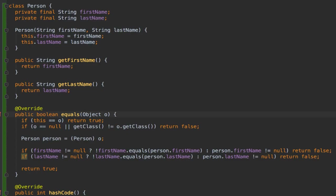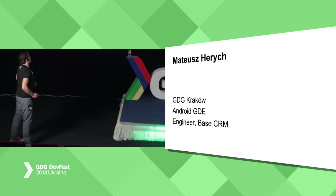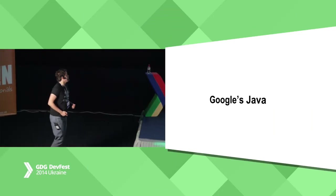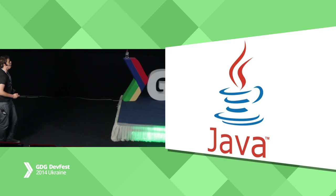So just to make sure we are on the same page — the Scala version is good, but the Java version is not. So now, since I know that you are not sleeping anymore, it's time to introduce myself. I'm Mateusz Herych. I am the co-organizer of the GDG Krakow events. I am also an Android member of the Google Developer Expert Program, and I work as an Android developer at Base CRM. And today I will talk about Guava, which stands for Google's Java, that can make your Java hot again.